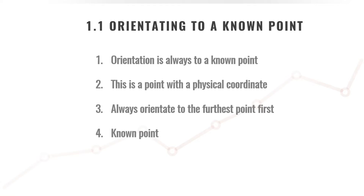One of the key principles when we look at orientation with a total station is to always orientate to the furthest point first. Why do we do this? When we orientate to the furthest point first, we know exactly what the error will be. For example, when we measure any distance between our furthest point and our total station, the error will be almost minimal. As soon as we measure points beyond our furthest point of orientation, we actually do not have any guarantee of what accuracies those points will be measured at.